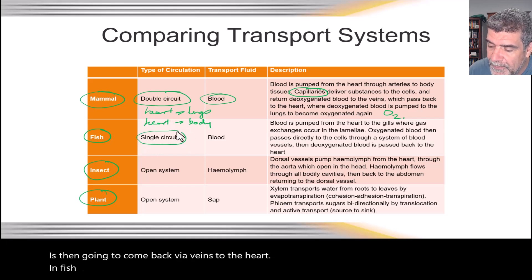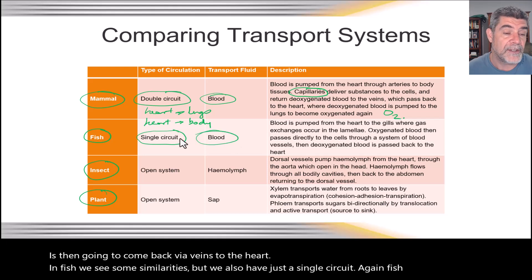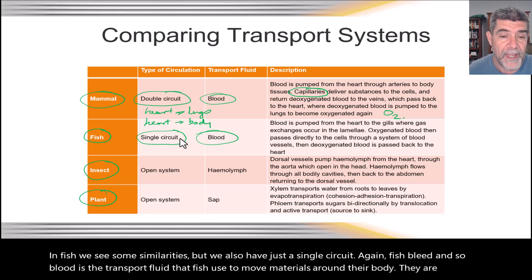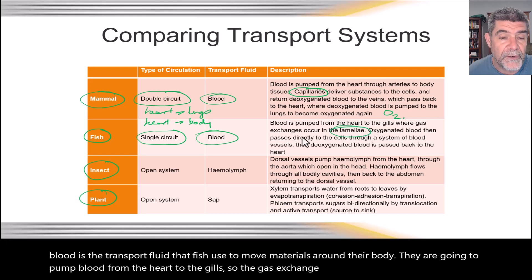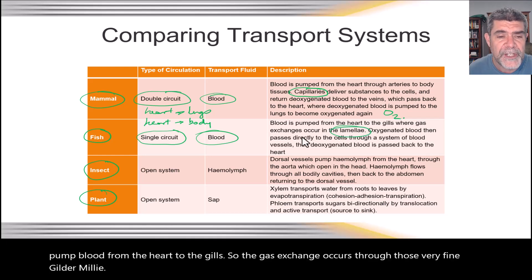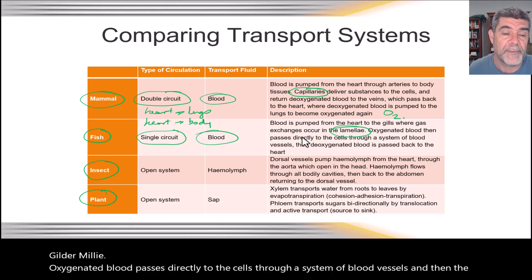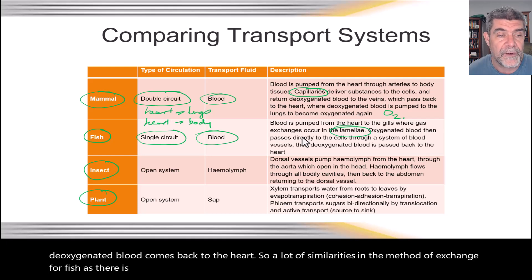In fish, we see some similarities, but they have just a single circuit. Fish also use blood as the transport fluid to move materials around their body. They pump blood from the heart to the gills, where gas exchange occurs through the very fine gill lamellae. Oxygenated blood passes directly to the cells through a system of blood vessels, and then deoxygenated blood comes back to the heart. There are many similarities in the method of exchange for fish as for mammals, except for that important double circuit versus single circuit difference.